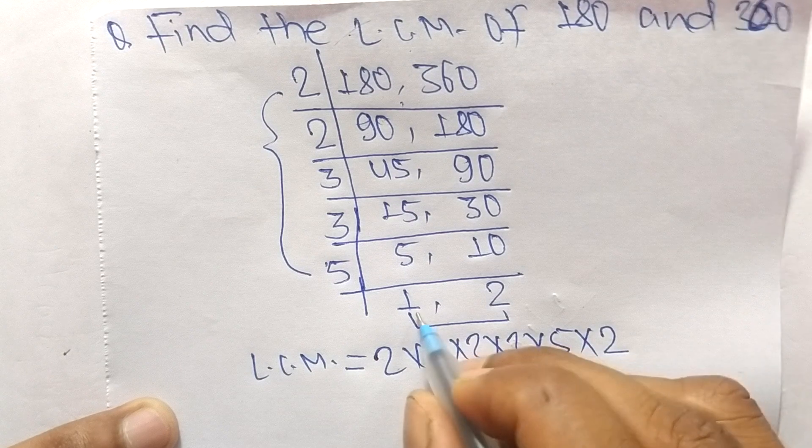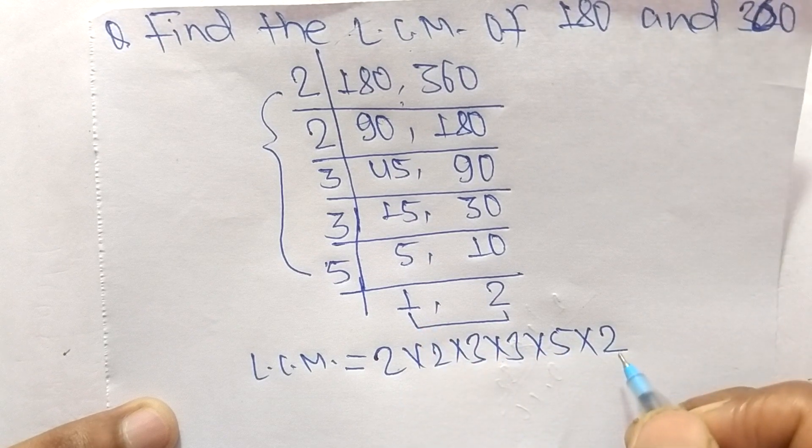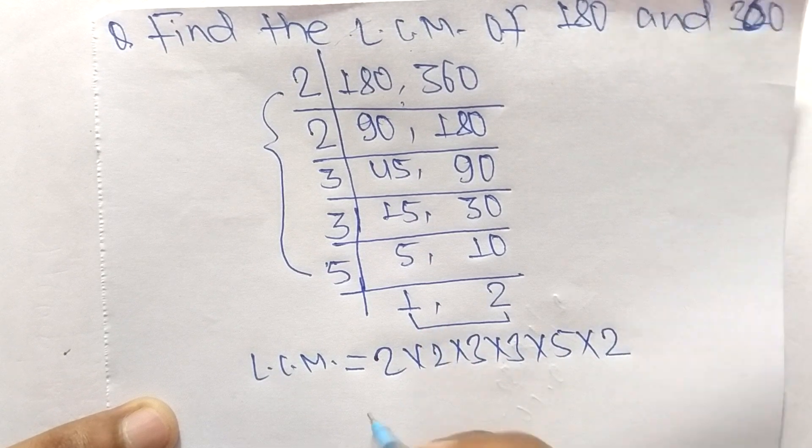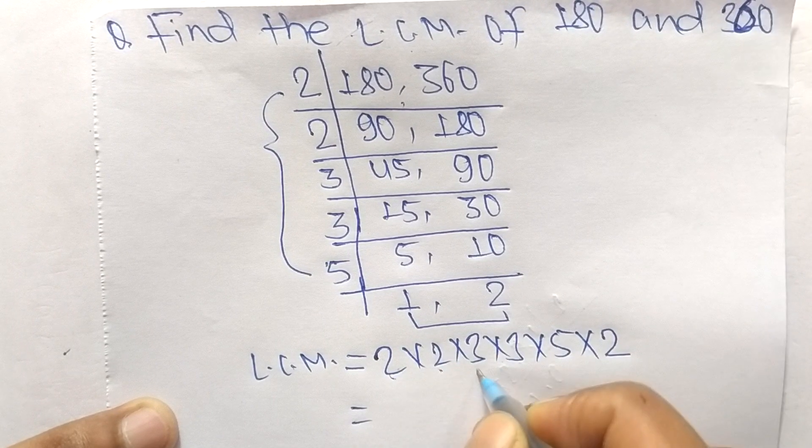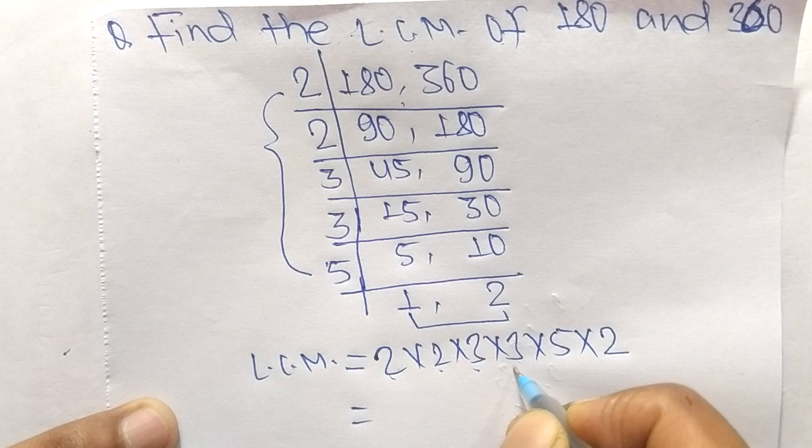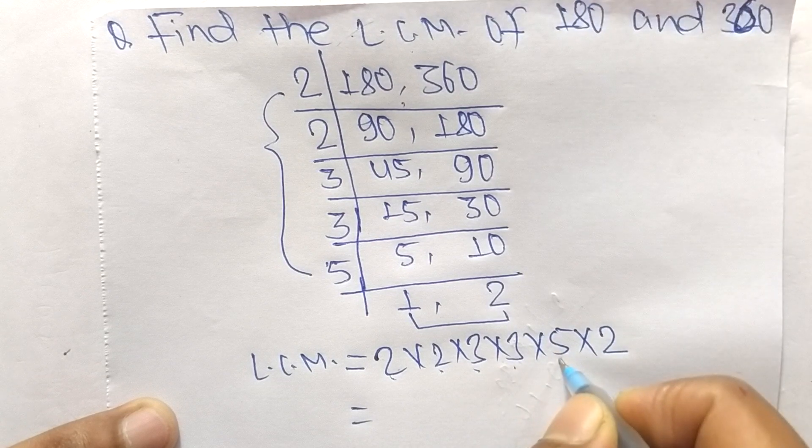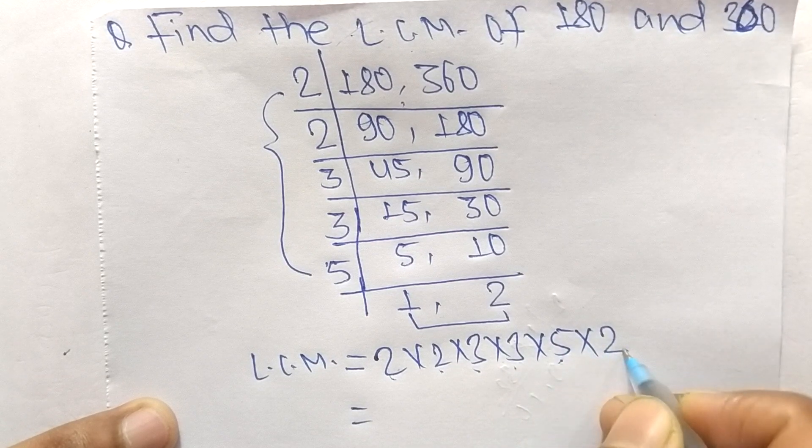So 2 times 2 means 4, 4 times 3 means 12, 12 times 3 means 36, 36 times 5 means 180, 180 times 2 means 360.